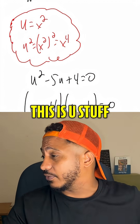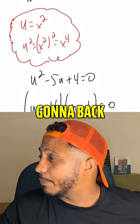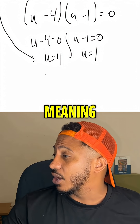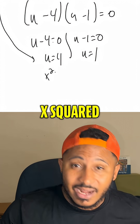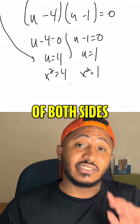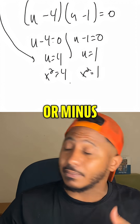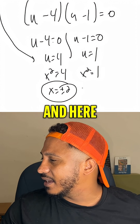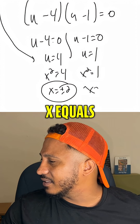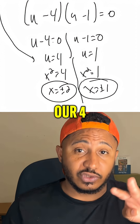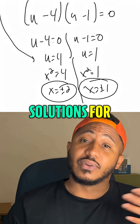But that's not it — we're talking about x's, right? This is u stuff. So we're going to back substitute u back into our equation, meaning x squared equals 4 and x squared equals 1. Taking the square root of both sides — don't forget that plus or minus — we get x equals plus or minus 2, and x equals plus or minus 1. And so that will be our four solutions for this equation.